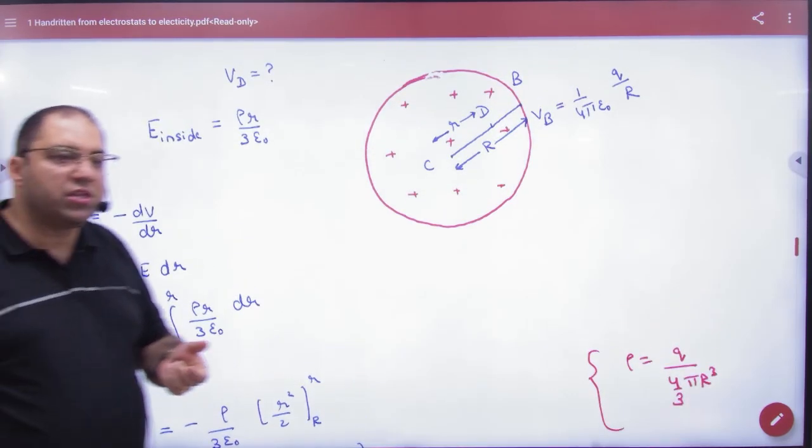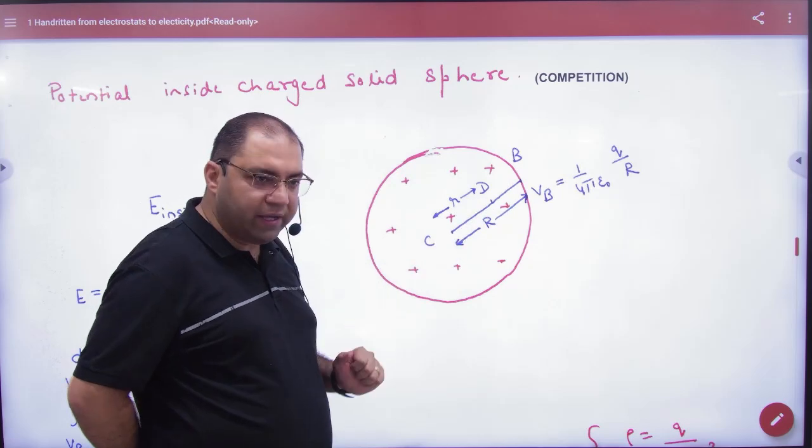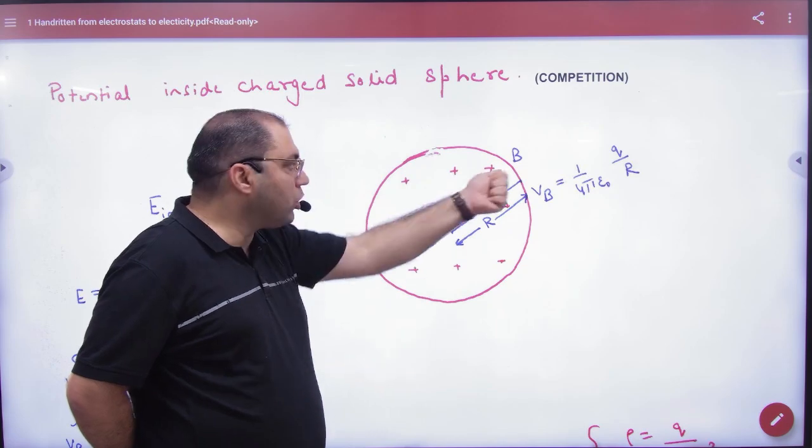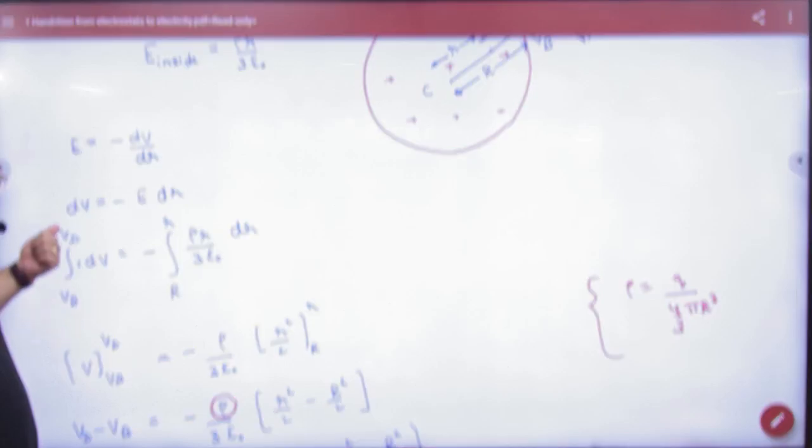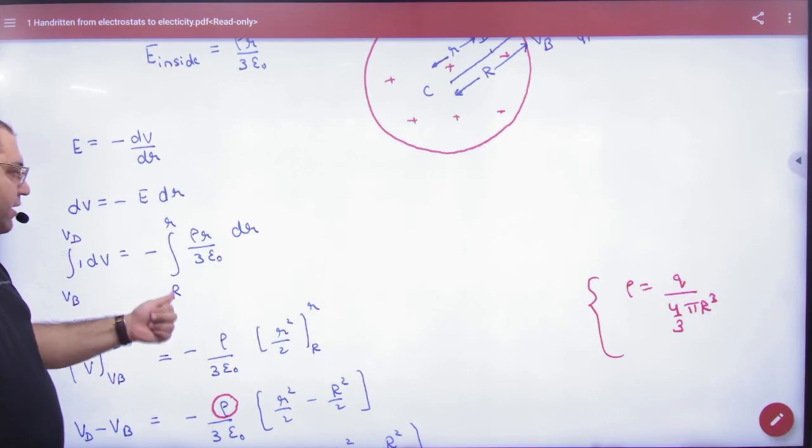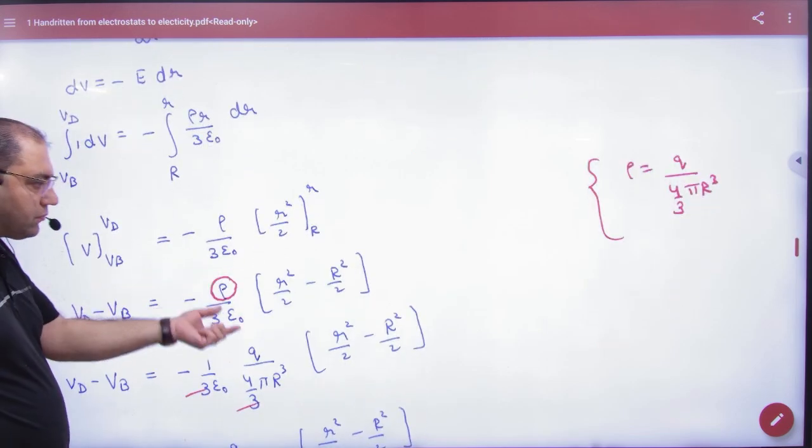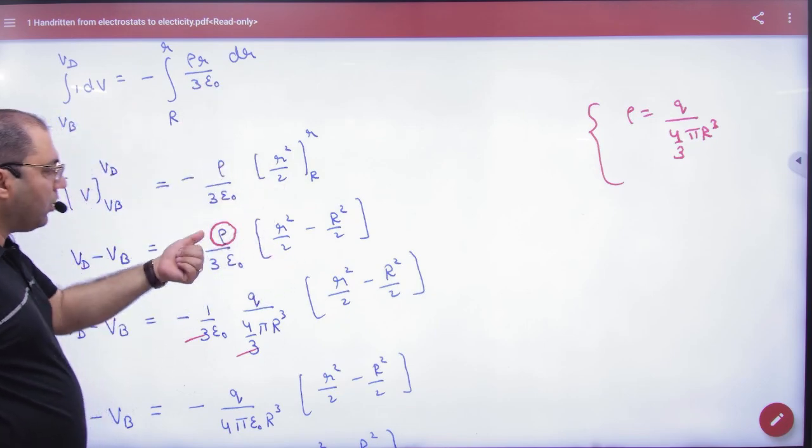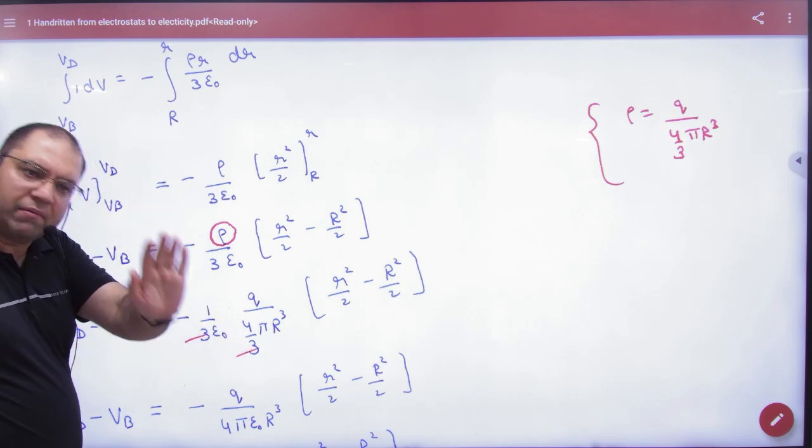Basically potential difference. Use potential difference between D and B points. Because I am going from B to D, limits from VB to VD, from R to r. So I will integrate. VD minus VB is constant. Integration: R to R² by 2 limit. Solve.